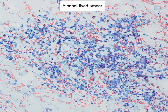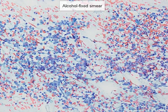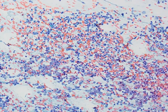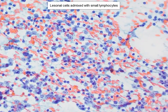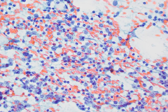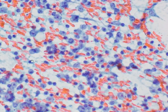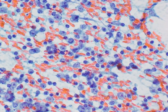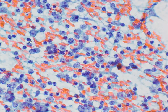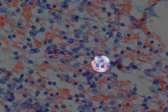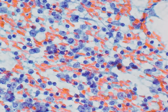This is a medium power view of the alcohol-fixed Papanicolaou-stained smear, and we can see that there are many lesional cells here mixed with lymphocytes in the background. When we compare them, the lesional cells are larger than lymphocytes. They seem to have fairly rounded nuclei, and certainly very prominent nucleoli. This is a good field where we can compare them with the size of a resting lymphocyte, and the nuclei are about perhaps three to four, maybe even five times the size of a resting lymphocyte. The cytoplasm is very indistinct here.